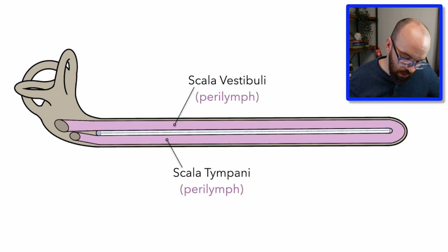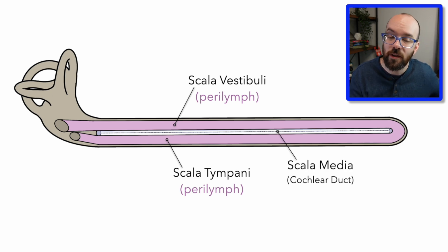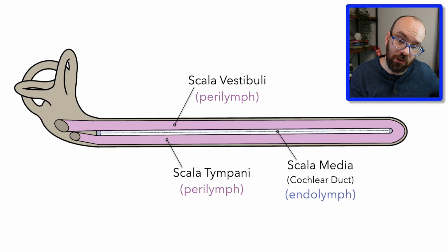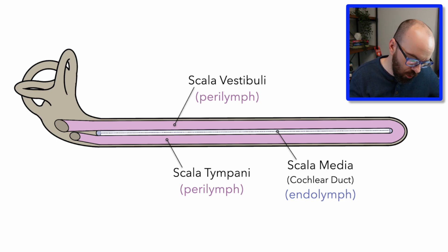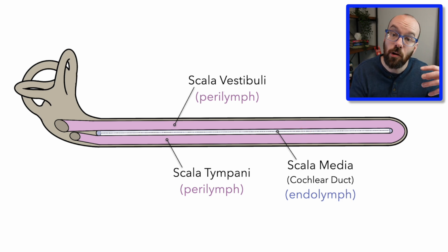The section in the middle is called the scala media, also called the cochlear duct. It has a fluid called endolymph — meaning inside water. There's also something called the organ of Corti in here, with little hair cells that are very small — we'll zoom in in just a minute.